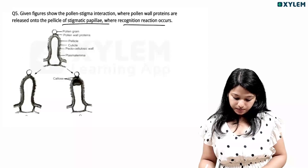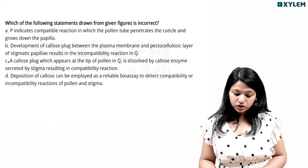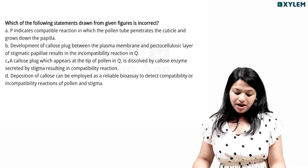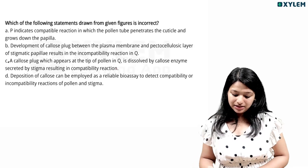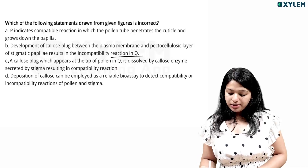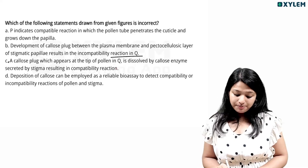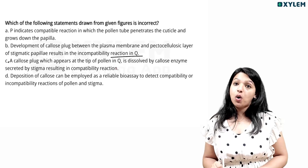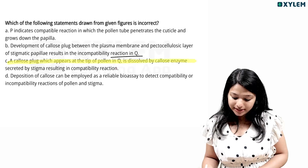P indicates a compatible reaction in which pollen-walled proteins penetrate the cuticle and grow down the papillae. Development of a callous plug between the plasma membrane and pectocellulose layer of stigmatic papillae results in the incompatibility reaction in Q. The callous plug which appears at the tip of pollen in Q is dissolved by callous enzyme secreted by stigma, resulting in a compatibility reaction. Deposition of callous can be employed as a reliable bio-assay to detect compatibility or incompatibility reactions of pollen and stigma.